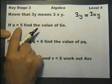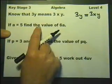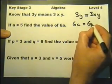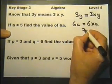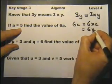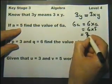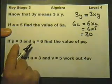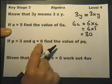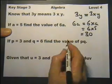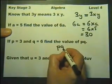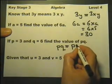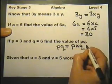For example, if a is 5, find the value of 6a. 6a means 6 times a, and if a is 5, then it means 6 times 5. Another example: if p equals 3 and q equals 6, find the value of pq. Appreciating that pq means you multiply the value of p by the value of q.